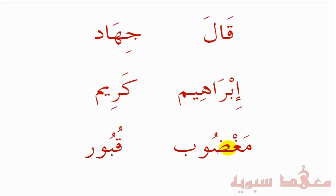The next word is 'Magdoub'. Here the Daad has a Dhamma followed by the Wow, giving the elongation of the U sound: 'Magdoub'. And finally 'Qubur' — there's the U sound again. The Ba has a Dhamma followed by the Wow. So you can see how the long vowel is formed there.